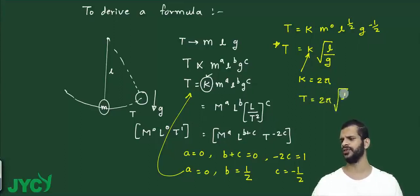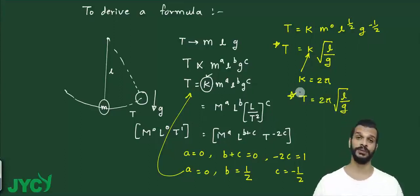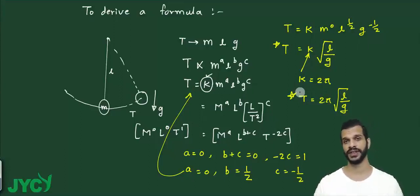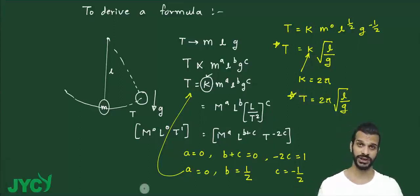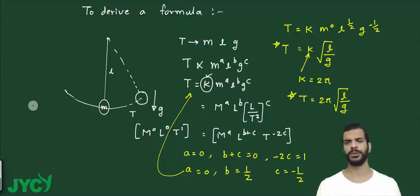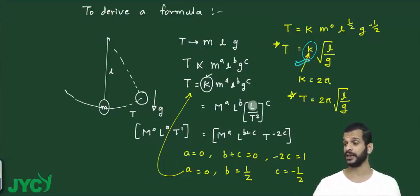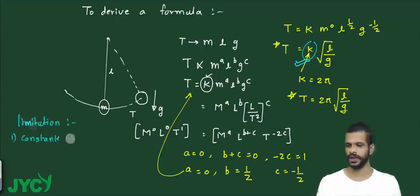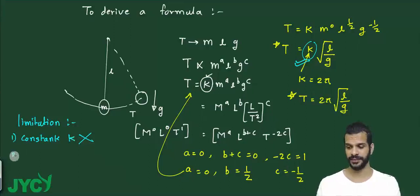Without knowing any physics — no torque equations, no force equations — we derived the time period formula for a pendulum. But dimensional analysis has some limitations. The first limitation, as you already saw, is that the constant k cannot be deduced from dimensional analysis.